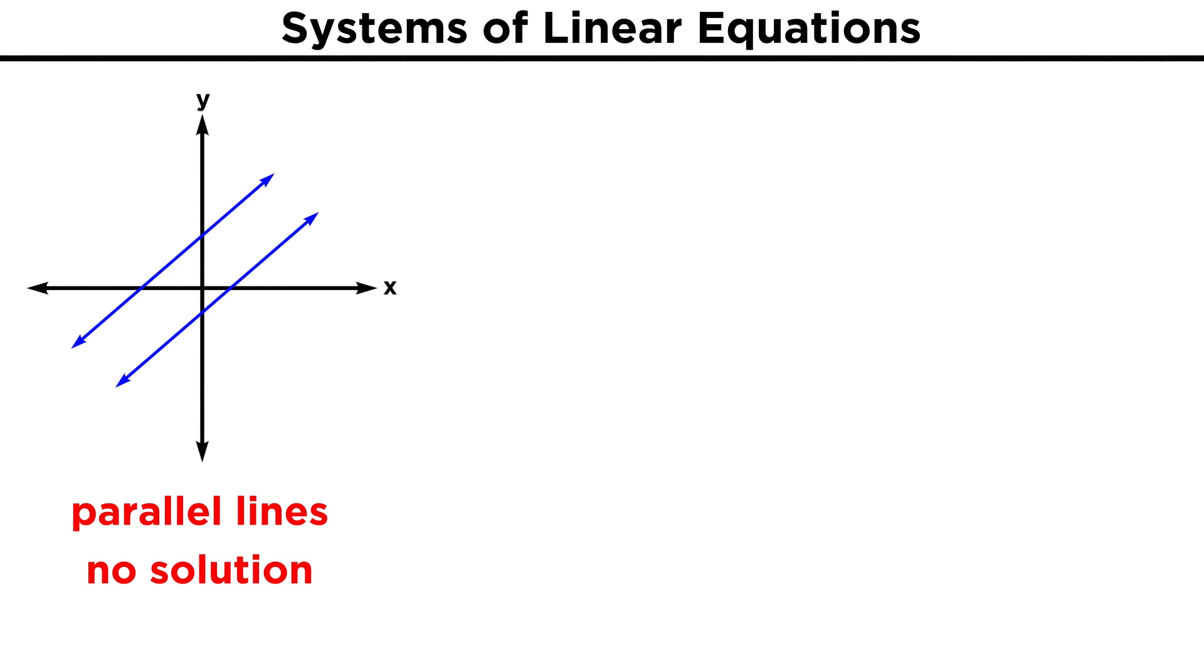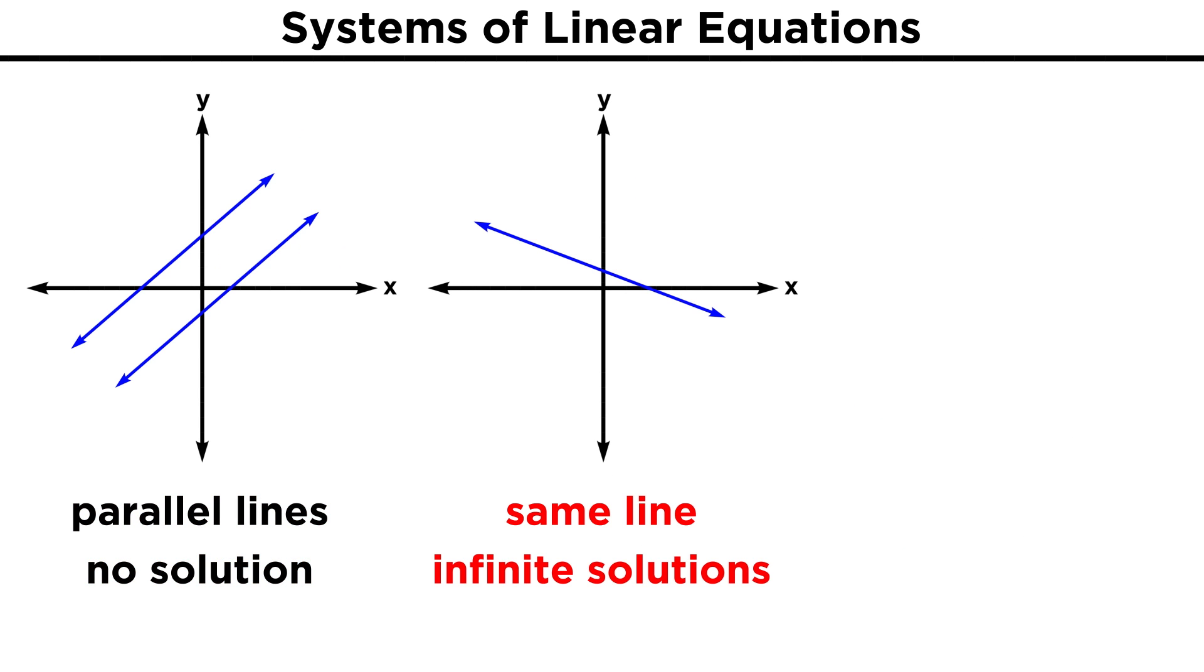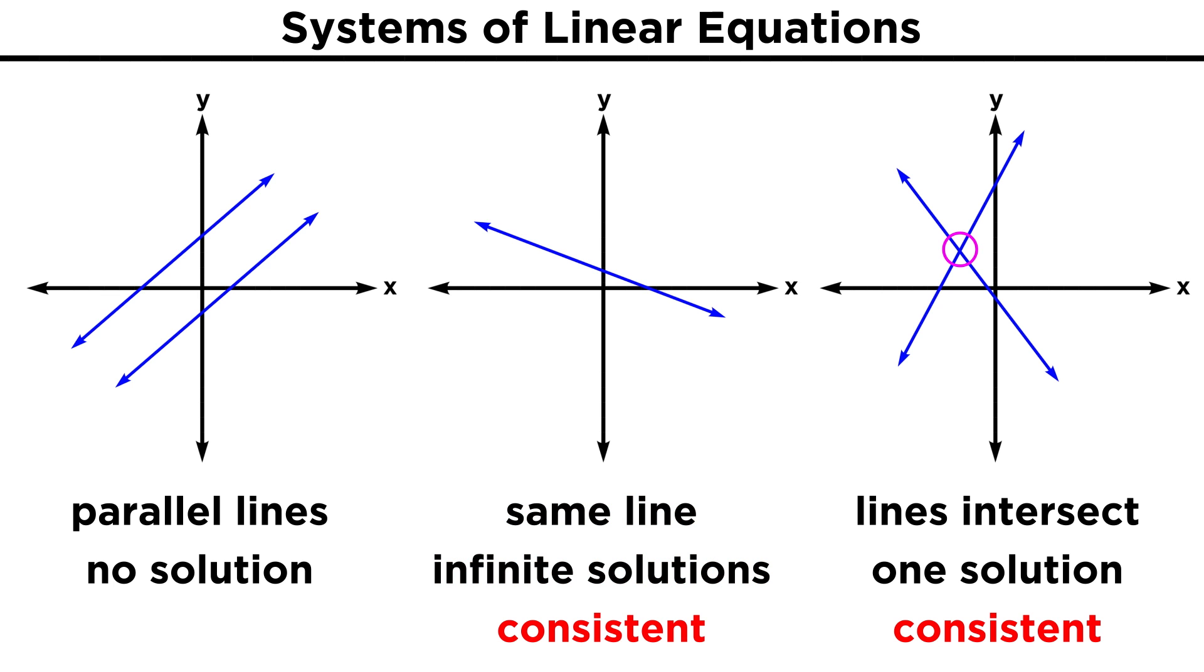If we had two lines that were parallel, there would be zero solutions to the system, and if the two equations were different ways of expressing the same line, there would be infinitely many solutions to the system, as we recall from algebra. When a system has at least one solution, we say the system is consistent, and when a system has no solution, we say that the system is inconsistent.